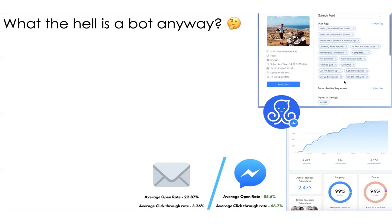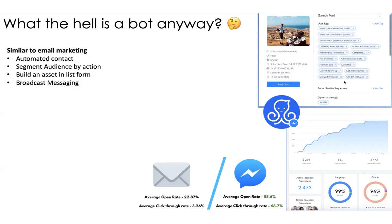A normal flow has an open rate of 100% and a click rate of 100% as well. It's similar to email marketing in that you can automate contact — send the first message, second message, third message, and so on. You can segment the audience by the action they take. You can build an asset in list form. If you're running leads here, it's not just one and done — you're building a list of people who have shown interest in some product, and you can always reach back out to them and know that they're going to open the message. So it's super important to build your list whether you're doing leads or not.